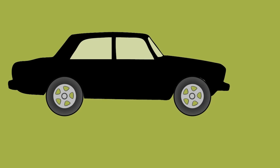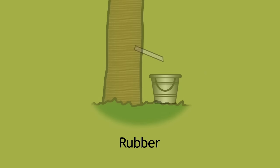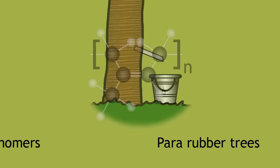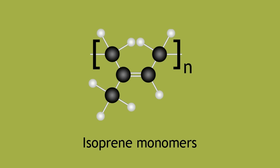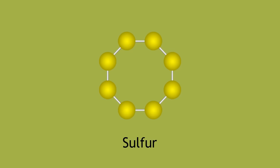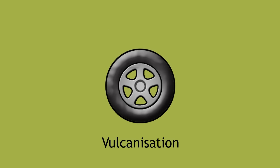Let's think about car tires and bicycle tires. These are made from rubber obtained from tapping para-rubber trees. Rubber is actually a polymer of isoprene monomers. It would not be able to provide the structural support and strength required to function as tires on its own. Sulfur is added to introduce cross-linking between the polymers in an industrial process known as vulcanization.